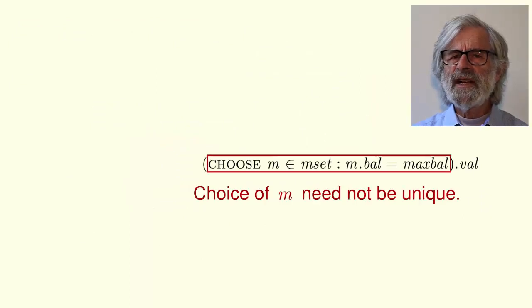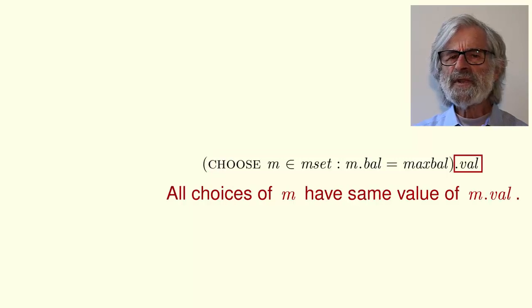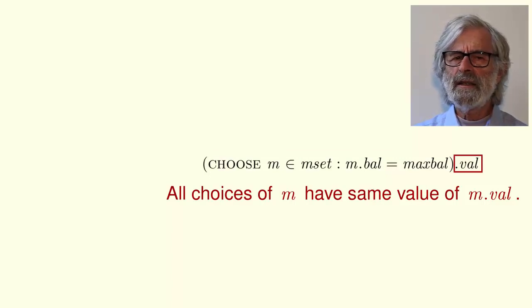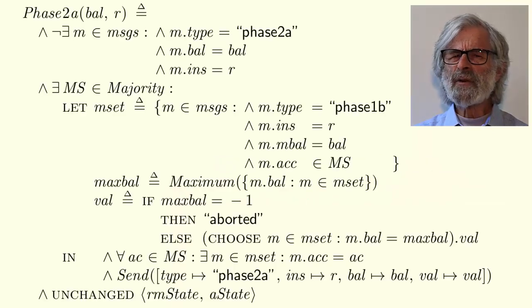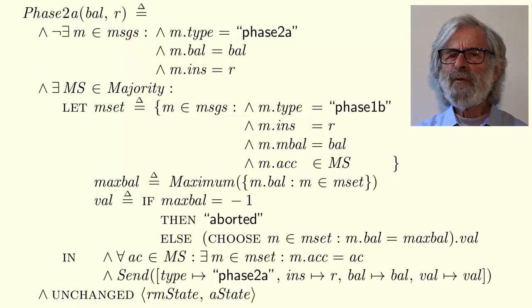There's one more thing I'd like to point out about this expression. The choose expression can allow more than one possible choice for m. In any reachable state of the algorithm, all possible choices of m have the same value of m dot val. Paxos commit is not an easy algorithm to understand, and this is probably its most subtle part. I do not know how to write a clearer, precise definition of this step of the algorithm. If you understand the algorithm, then when you get used to the math, I think you'll find this definition as elegant as I do.